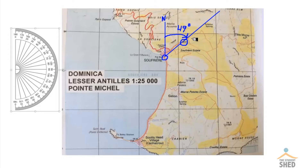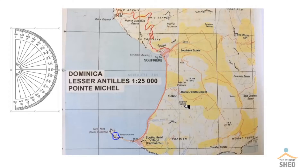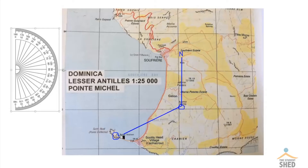Let's try another example. We're going to find the angular bearing of the TV relay station, which is located right there, from Sulphur Spring. To get started we must put the north-south line in place and then run a line from Sulphur Spring straight through the TV relay station.